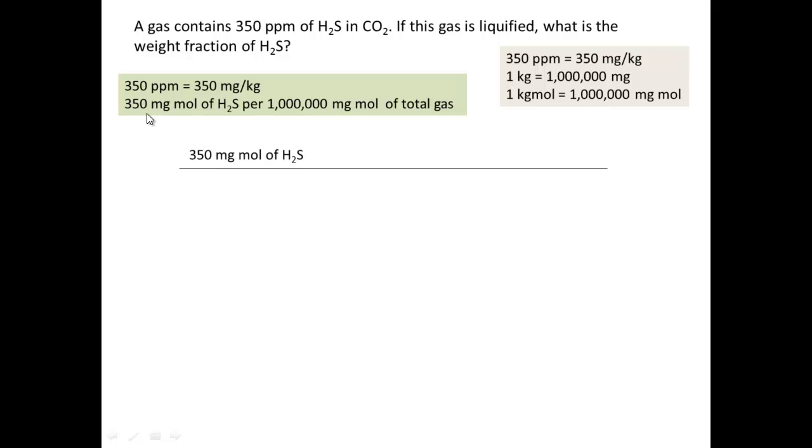To convert the 350 mgmol of H2S to mass, we can use the dimensional equation. We put here 1 mgmol of H2S is 34 mg of H2S. 34 is the molecular weight of H2S. Multiplying these two values, we have 11,900 mg of H2S.